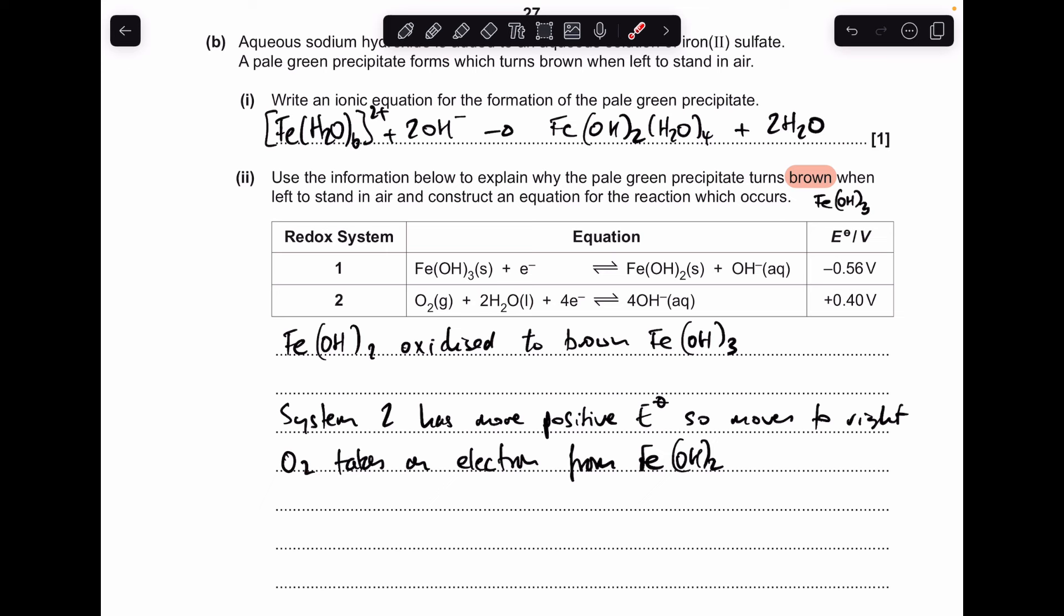The only thing we're left to do now is to just create the overall equation for the reaction. So adding system 2 to 4 times system 1 in reverse, and it's times 4 for this one because there's only one electron in that, but four electrons there, gives us this. We can't leave it like that because we've got four hydroxide ions on each side. So I just need to cancel those out, and what's left is the final equation.